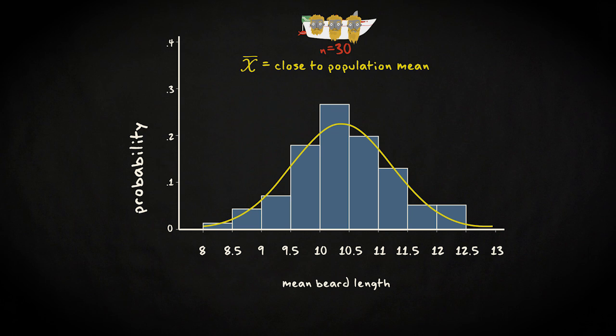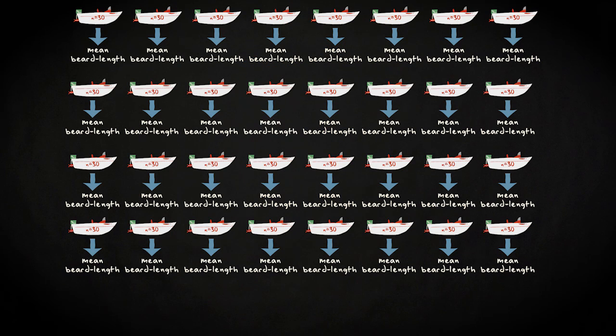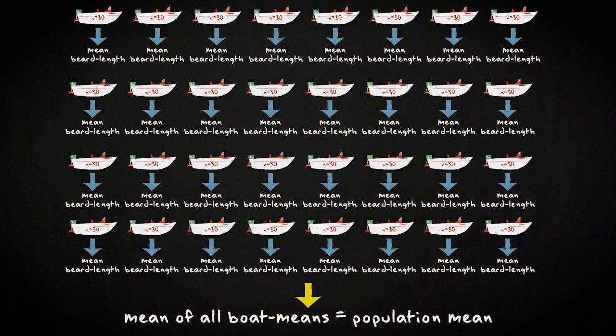This is not strange if you think about it. You would expect that in most cases the mean in a boat is close to the population mean. In one boat, the mean will be a little higher, and in another a little lower. However, if you look at many boats, you would expect that the mean of all these different boat means would be the population mean.